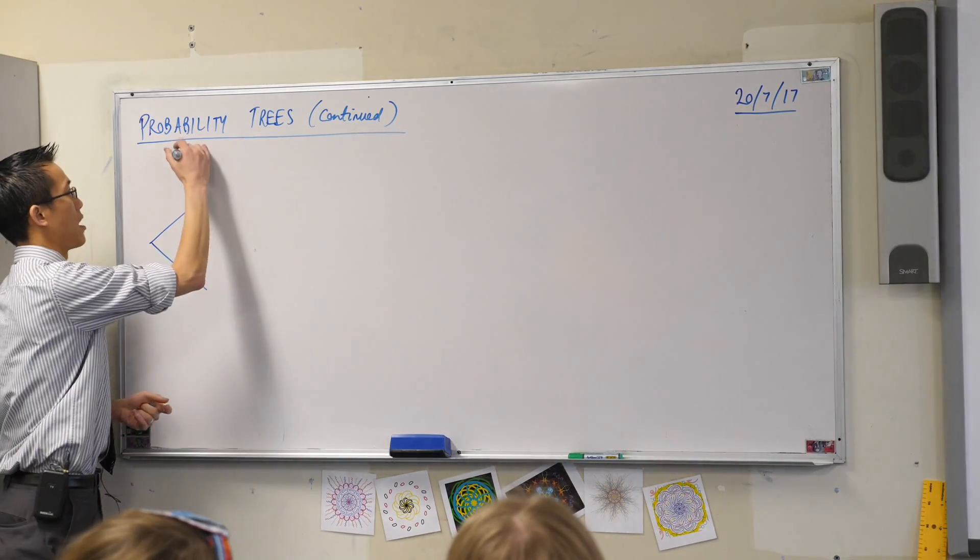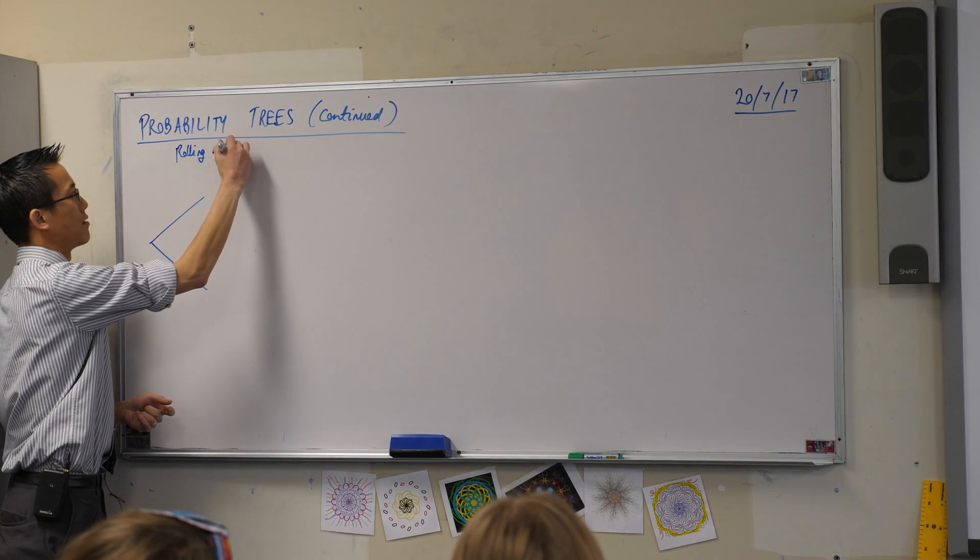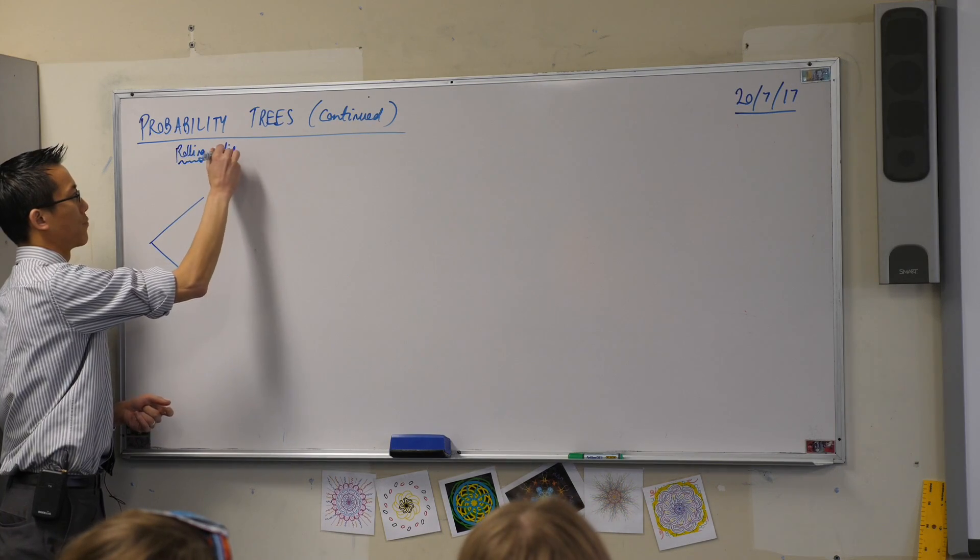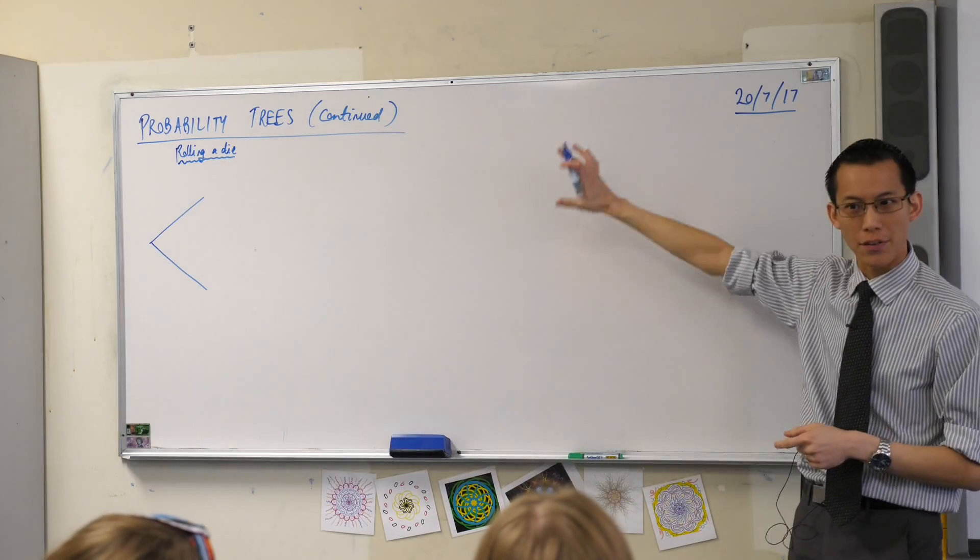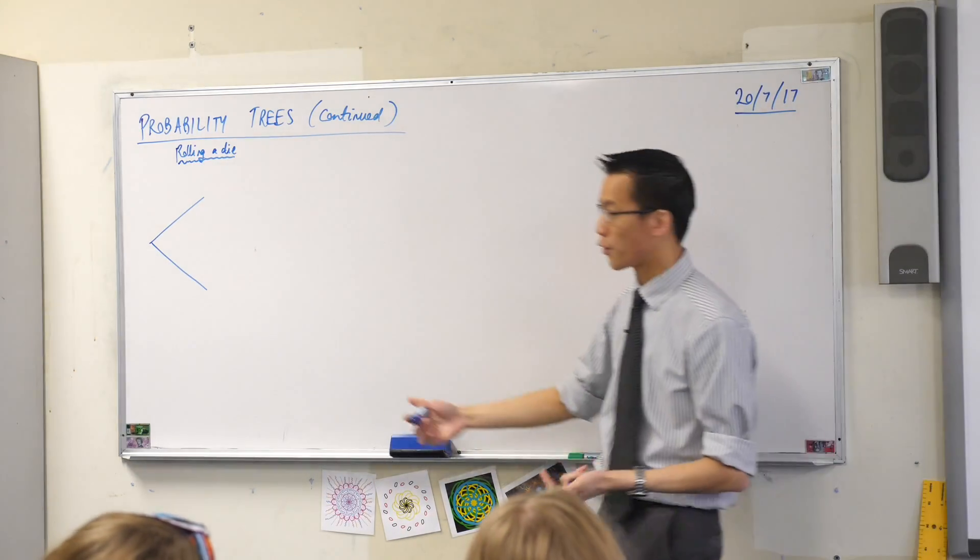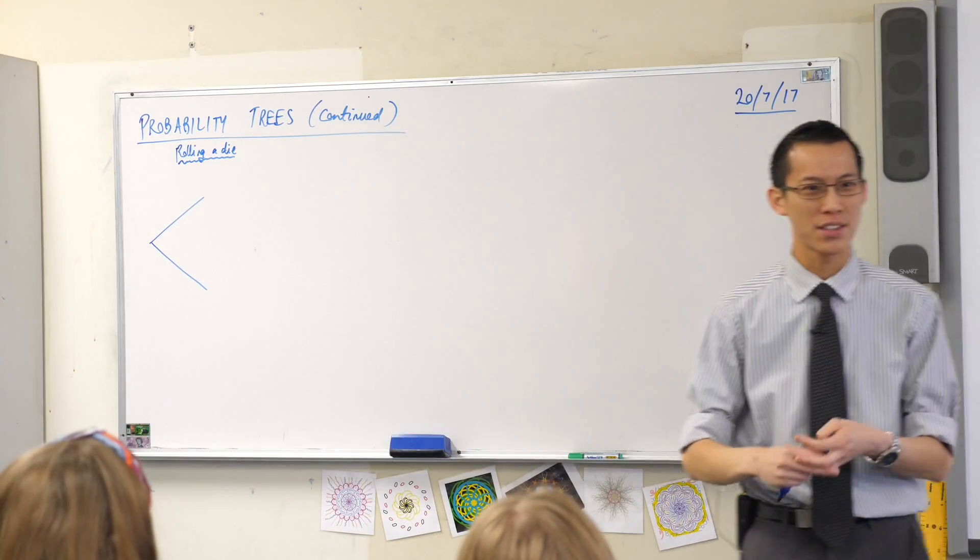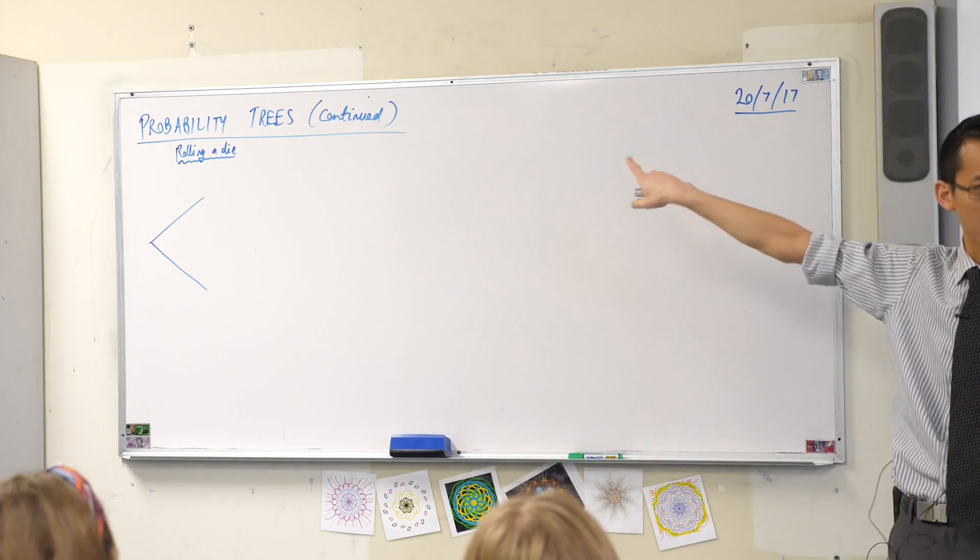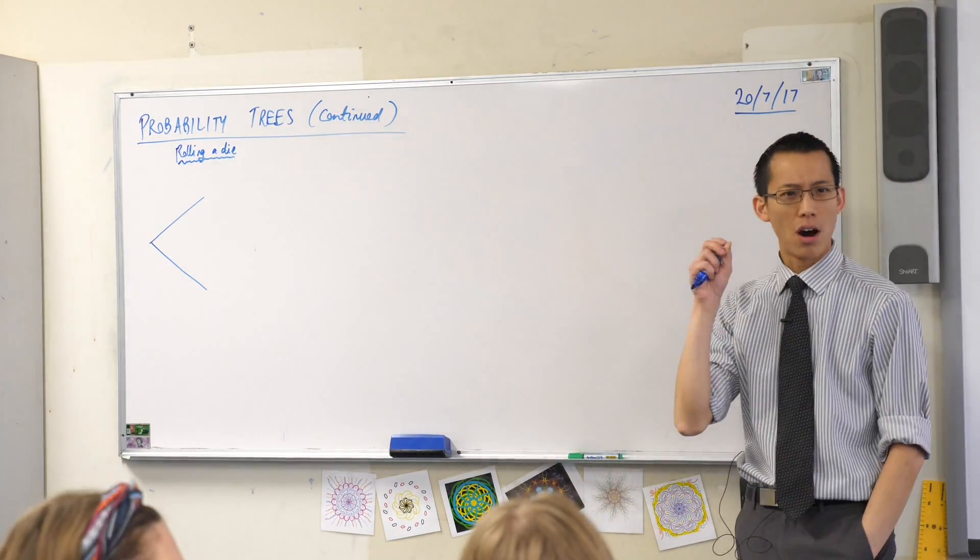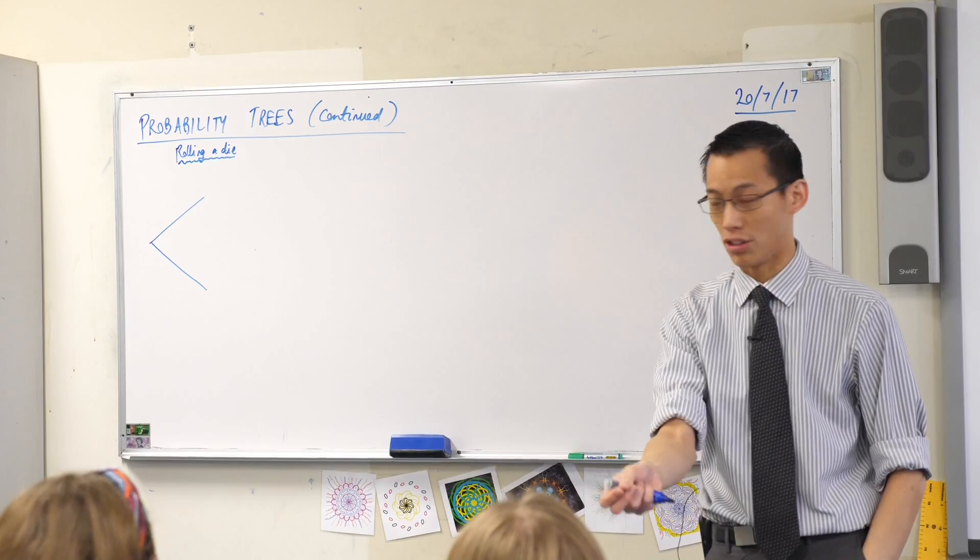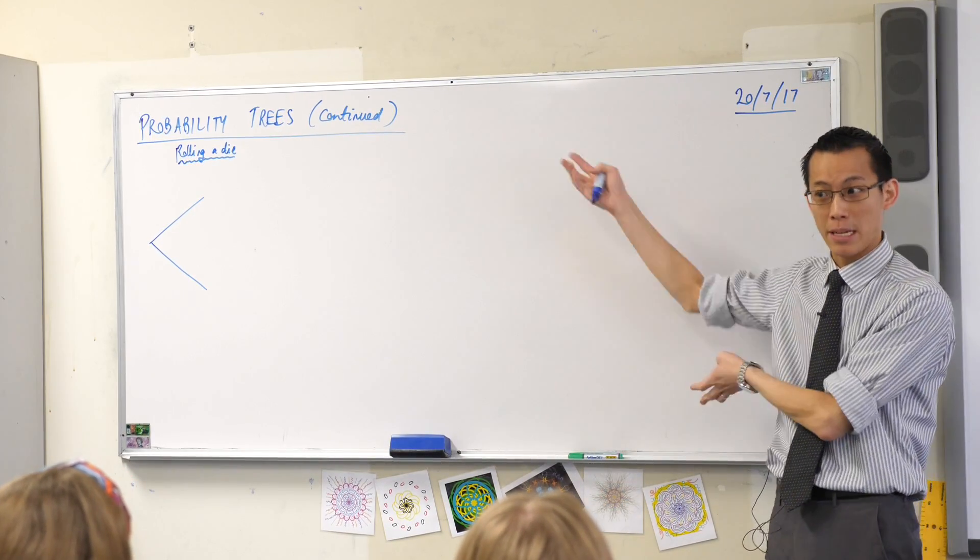So for example, if we were rolling a die, we know that we can describe all the different outcomes that are there. I could, for instance, because there are six possibilities, six items in the sample space for rolling a die, I could have six branches going out. But it depends very much on what the question is asking you based on whether you actually draw that many branches or not.